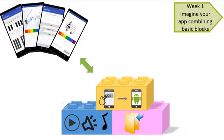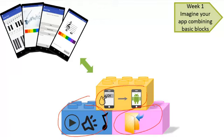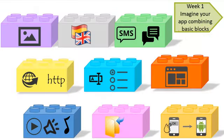These apps are made of different basic functionalities. For example, one functionality is to play a sound. Another one is to save information on the phone. Another is to change screen when the user clicks a button. We will consider these basic functionalities as building blocks or bricks. And this week, we will look at six bricks.